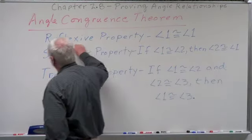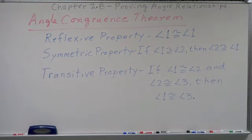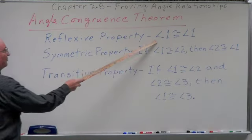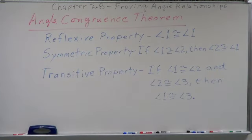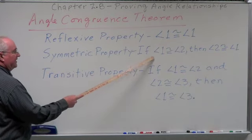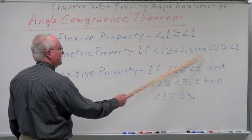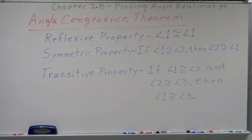The reflexive property, which simply states that angle 1 is congruent to angle 1. I'm equal to myself. Symmetric property states that if angle 1 is congruent to angle 2, then angle 2 is congruent to angle 1. Identical twin property.